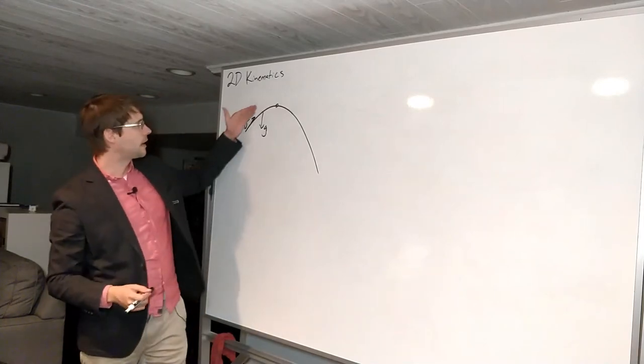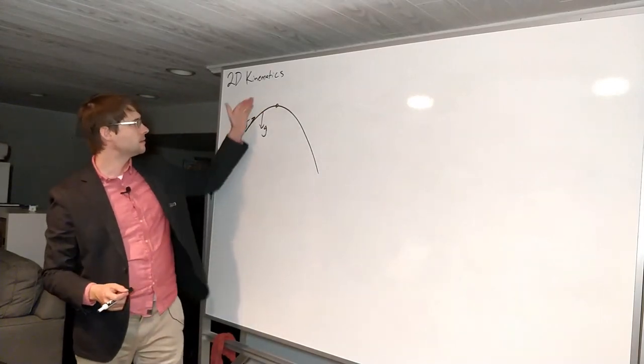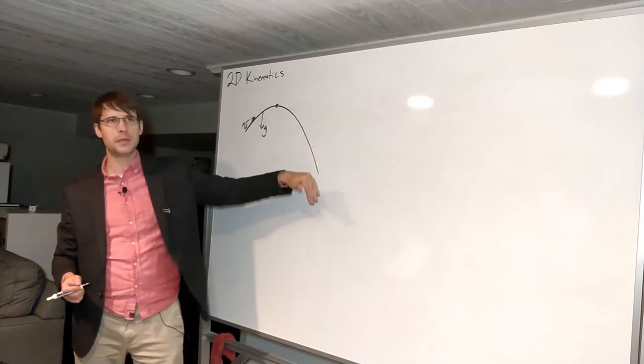So the velocity actually is parallel to the path all the way throughout. It's smaller at the top, bigger, lower down.